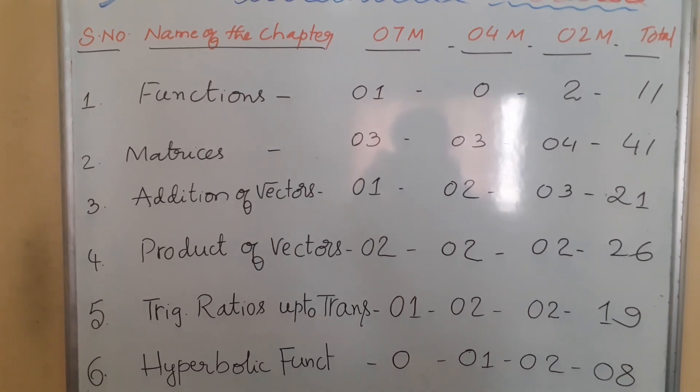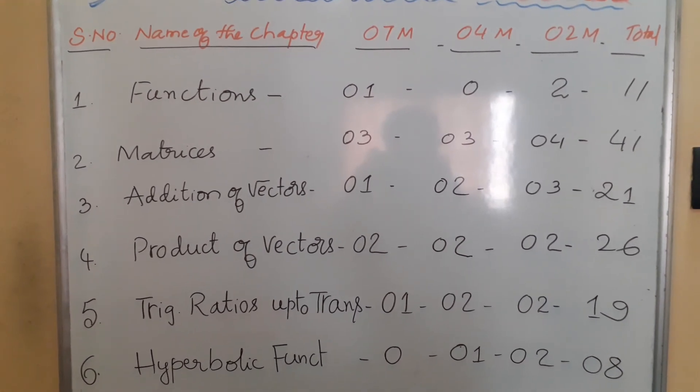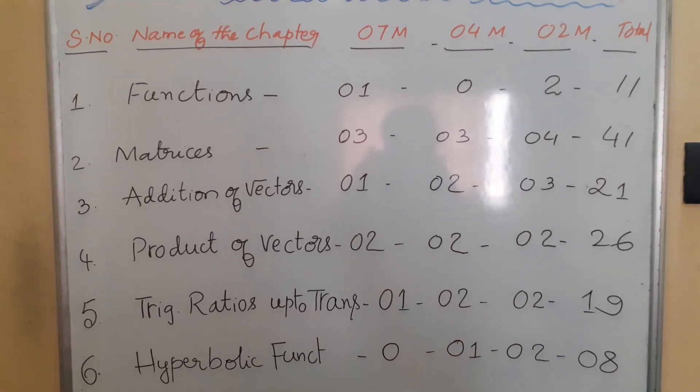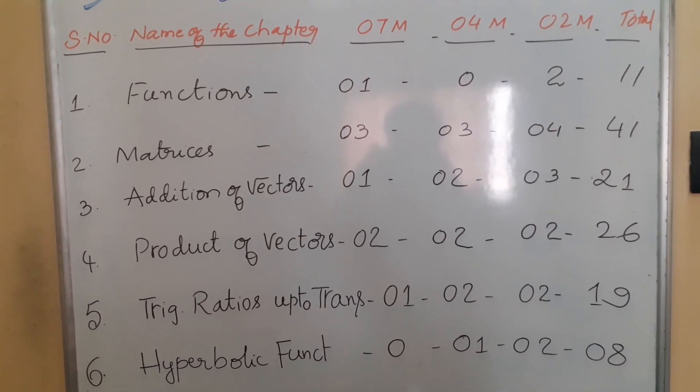Next chapter is Trigonometry Ratios up to Transformations. From this chapter, one 7-mark question will be coming, two 4-mark questions, two 2-mark questions. Total weightage is 19 marks.